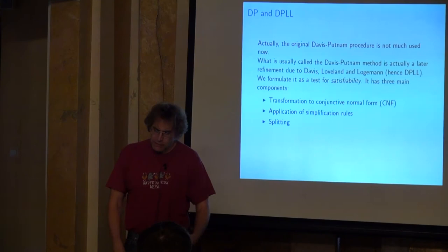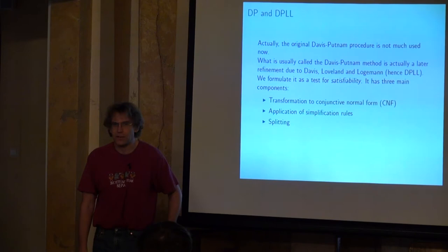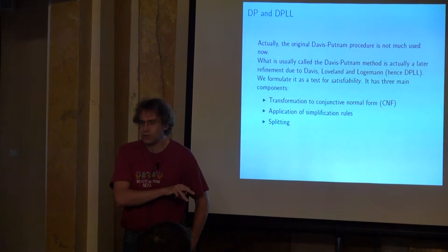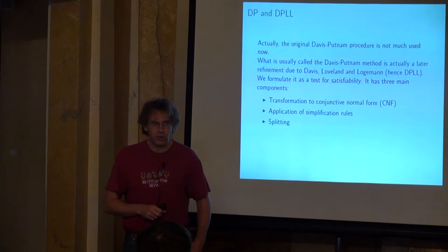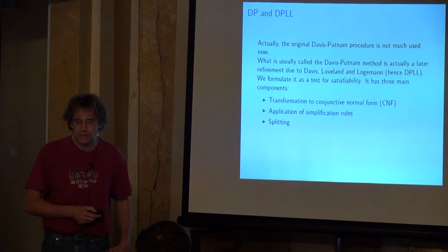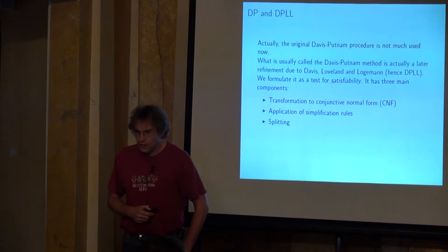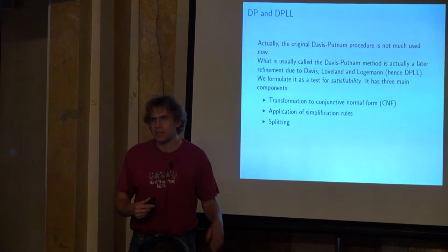The terminology around Davis-Putnam is a little inaccurate. There were actually two different algorithms: the original Davis-Putnam algorithm published in 1960 as part of a first-order theorem-proving algorithm, and a later algorithm published in 1968 by Davis, Loveland, and Logemann — nowadays called DPLL for Davis-Putnam-Loveland-Logemann. The original 1960 algorithm is basically not used today; what people refer to as Davis-Putnam is normally the 1968 DPLL version.